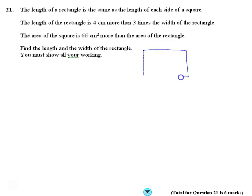So the length of a rectangle is the same length of each side of the square. So actually my square is bigger. So each one of these should be the same length. Now there's a couple of ways you could do it. What I thought was if I start with the width as x, I know the length of the rectangle is 4 more than 3 times. So 3 times is 3x, 4 more is plus 4. So we know that this square has sides of 3x plus 4 as well.